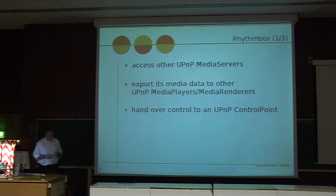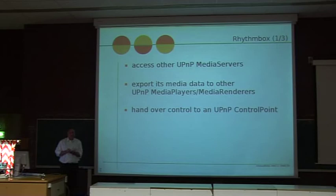Now, let's go to Rhythmbox. What we've added to Rhythmbox are these three key features. It's now able to access other UPnP media servers on the network. That sounds pretty easy. It's a little bit more complicated under the hood, but that's what Coherence is for. It can export its media data to other UPnP players, as I told you before, PS3, Xbox, something like that.